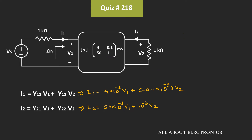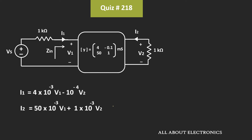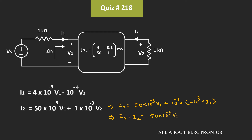Now, if you observe, the voltage v2 can be given as −i2 × 1 kΩ, that is −10³·i2. Substituting the value of v2 in the second expression, we get i2 = 50×10⁻³·v1 + 10⁻³·(−10³·i2), which gives i2 + i2 = 50×10⁻³·v1, so i2 = 25×10⁻³·v1.